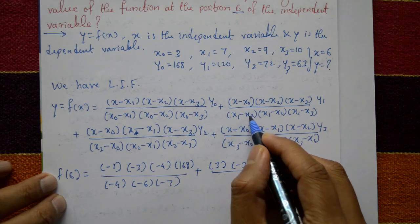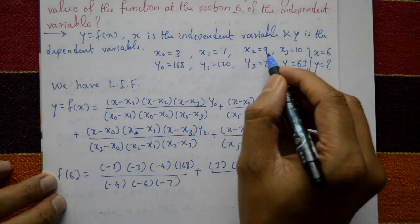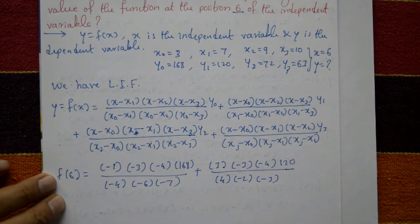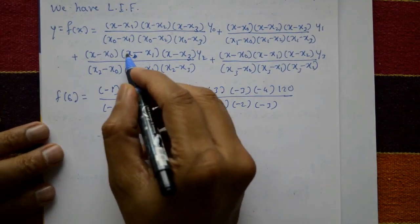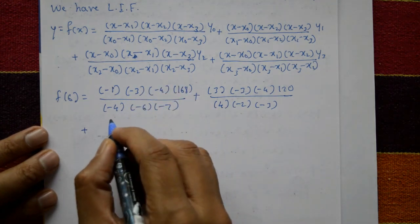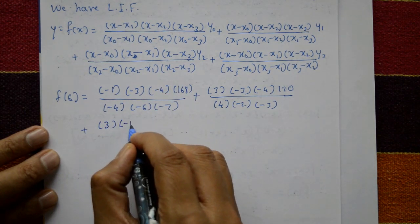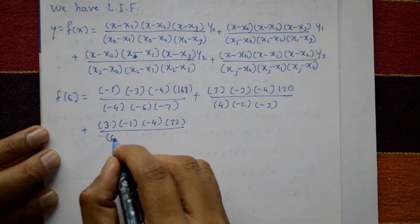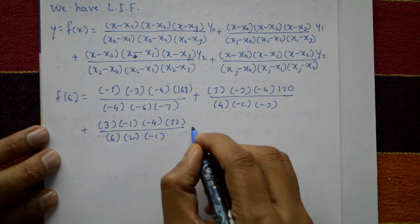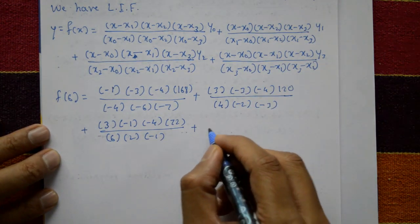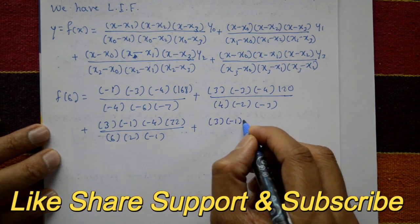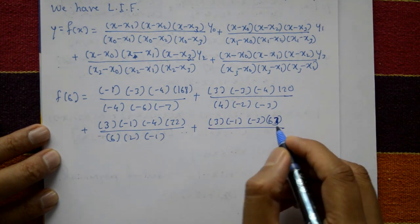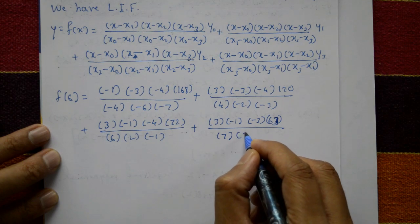Divided by x1 minus x0, x1 minus x2, x1 minus x3, giving 4, minus 2, minus 3. Next, third term: using the values 3, minus 1, minus 4 and y2 equals 72, divided by 6 times 2 times minus 1. Plus fourth term: substituting values 3, minus 1, minus 3 and y3 equals 63, divided by 7 times 3 times 1.